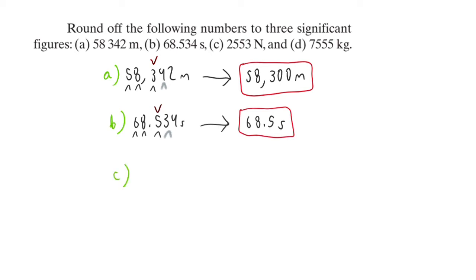C. 2,553 Newtons. First three numbers, 2, 5, and 5. The 3 is smaller than 5, which means this 5 is not going to round up. So this is our third answer.